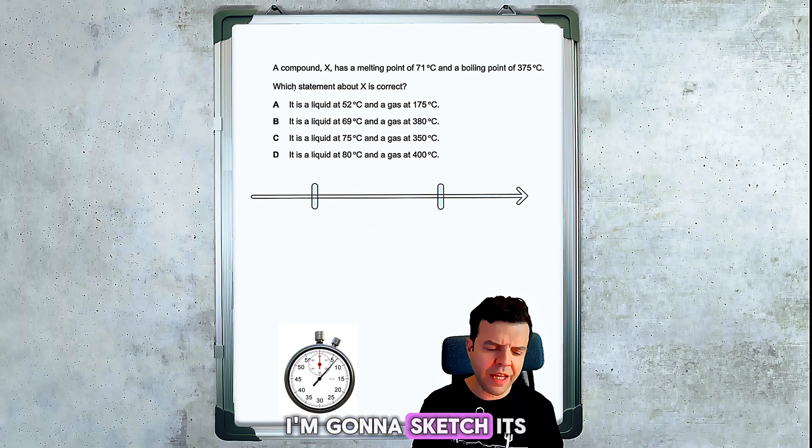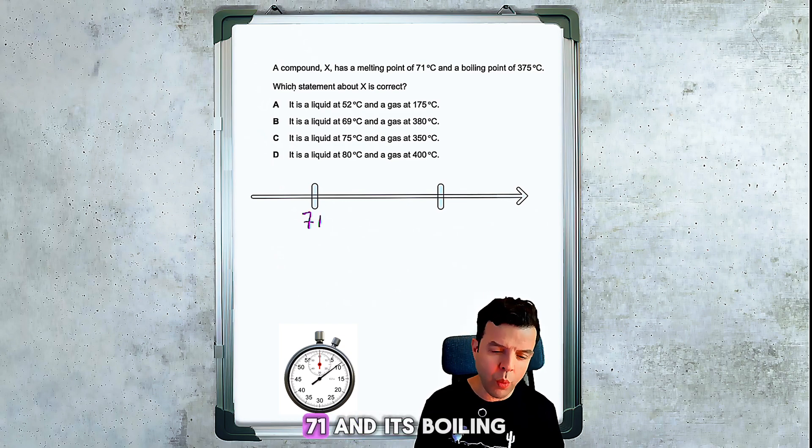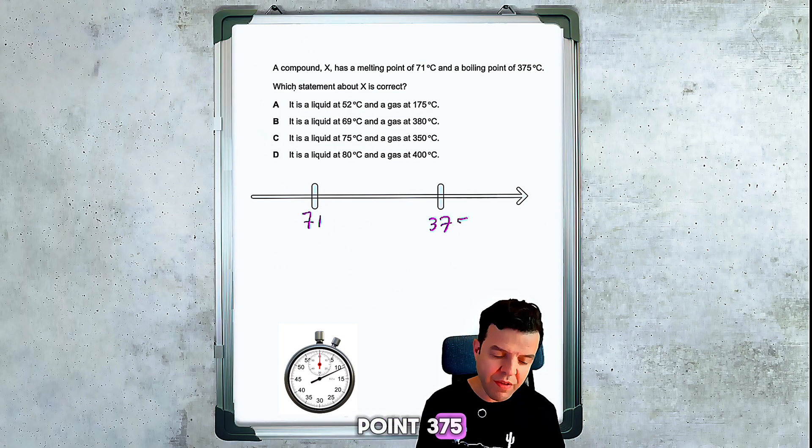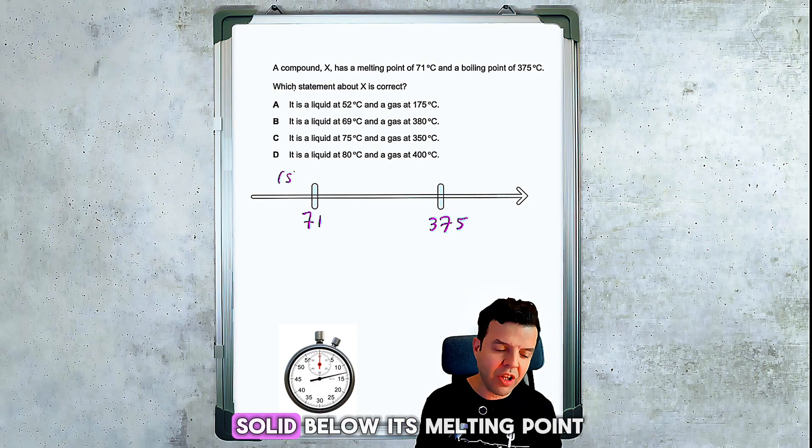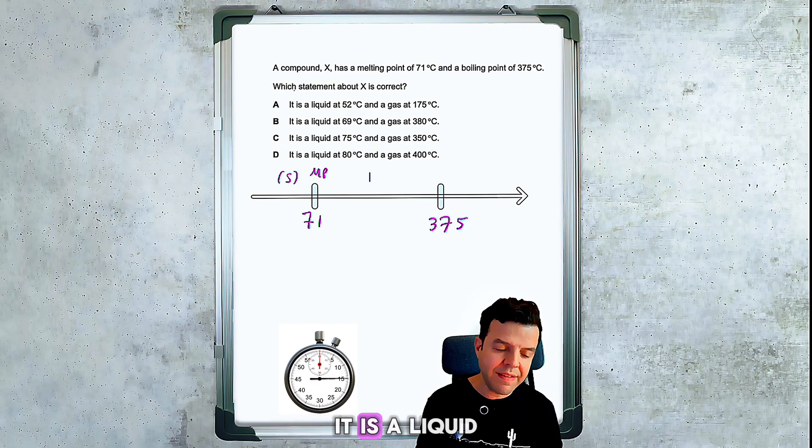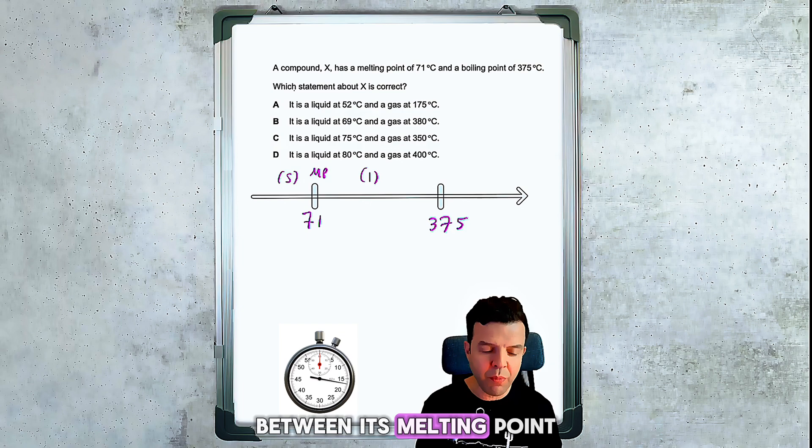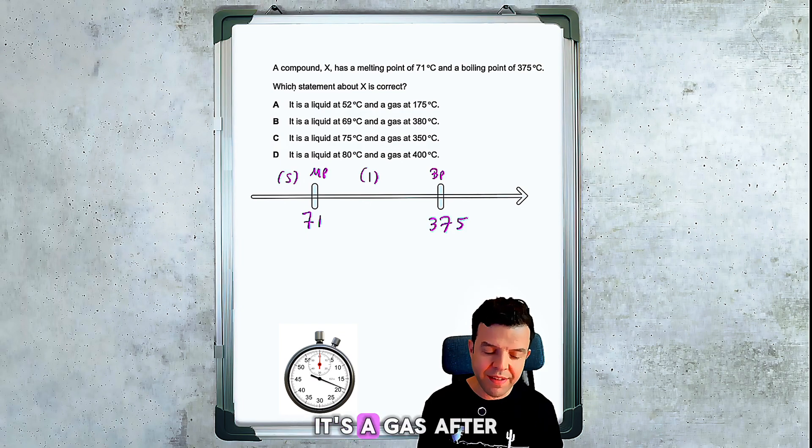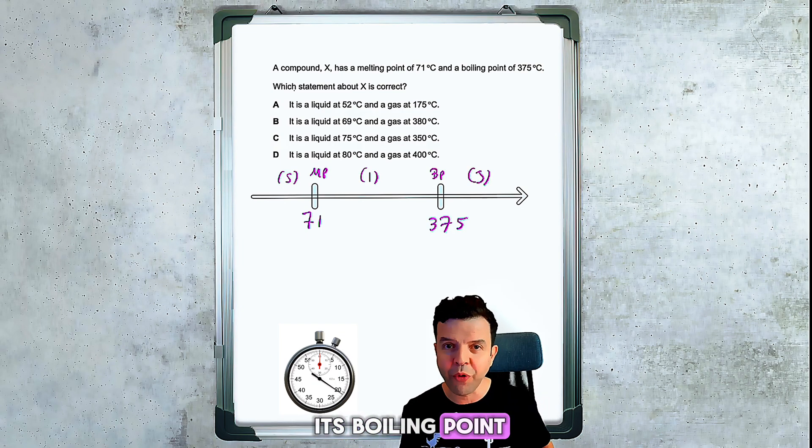The first thing I'll do is sketch its melting point at 71 and its boiling point at 375. Any substance is a solid below its melting point, a liquid between its melting point and boiling point, and a gas after its boiling point.